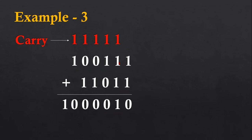Now example number three. Here in the first column we have two ones, so the result is zero, and it provides a carry of one to the next higher column. Now in the second column, there is a different scenario — three ones are available. Using the simplest method: first add two ones, result is 10 in binary. Now if we add one more one, the result will be 11. It means you keep one here and put another one as carry.